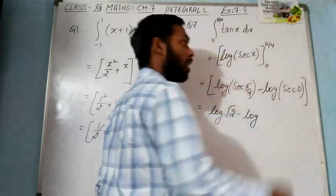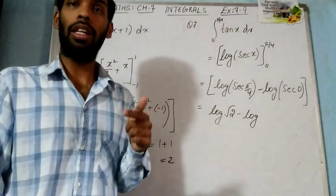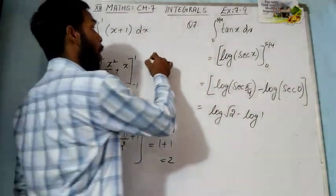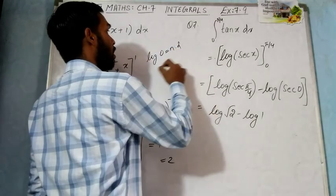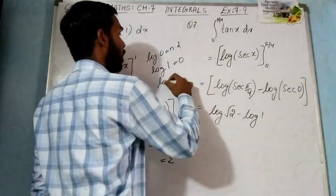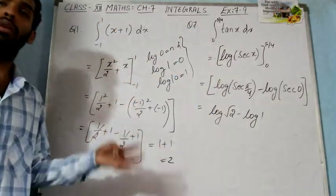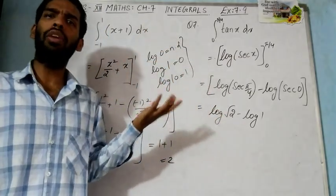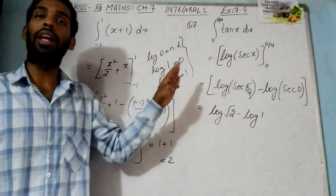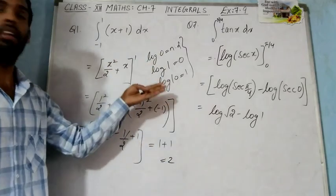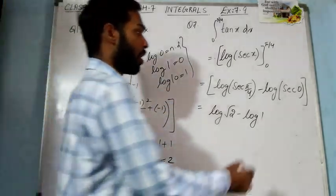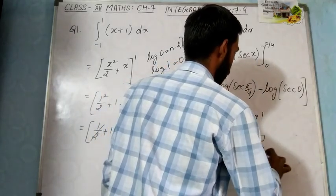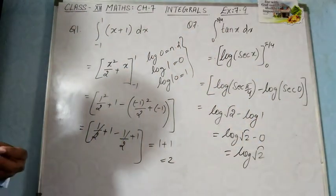Minus log of sec 0: cos 0 is 1, so sec 0 is 1, and log 1 equals 0. Note these standard values: log 0 is not defined, log 1 is 0, and log 10 is 1. These values are useful in this chapter, the next chapter, and even in physics and chemistry. So log root 2 minus 0 equals log root 2. The answer is log √2.